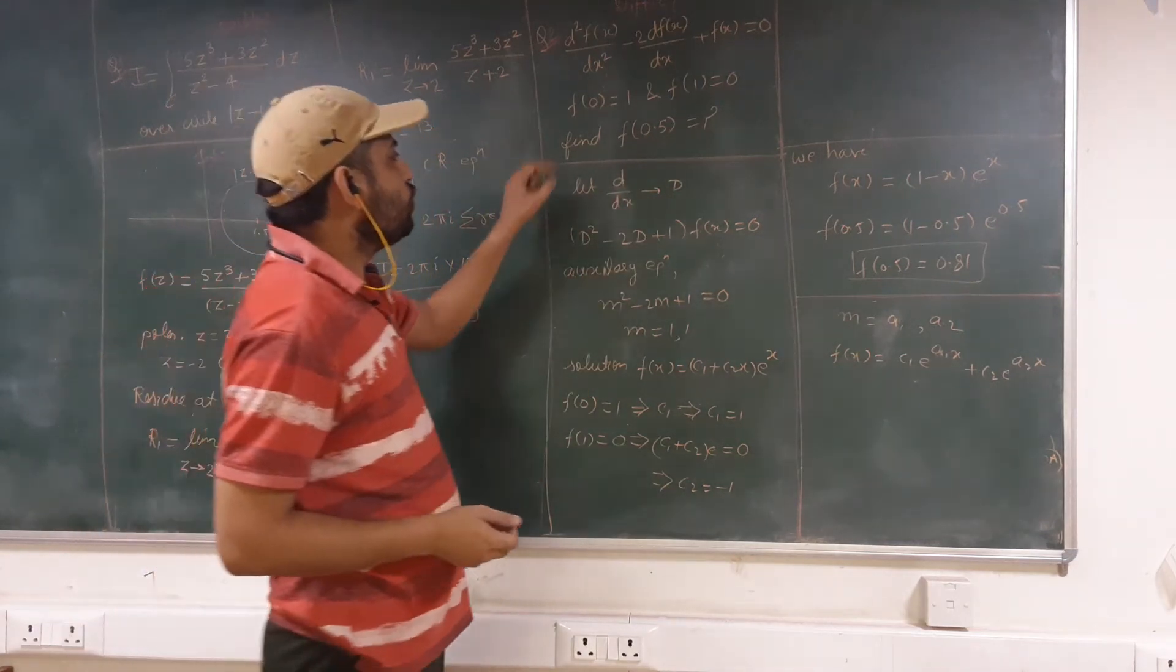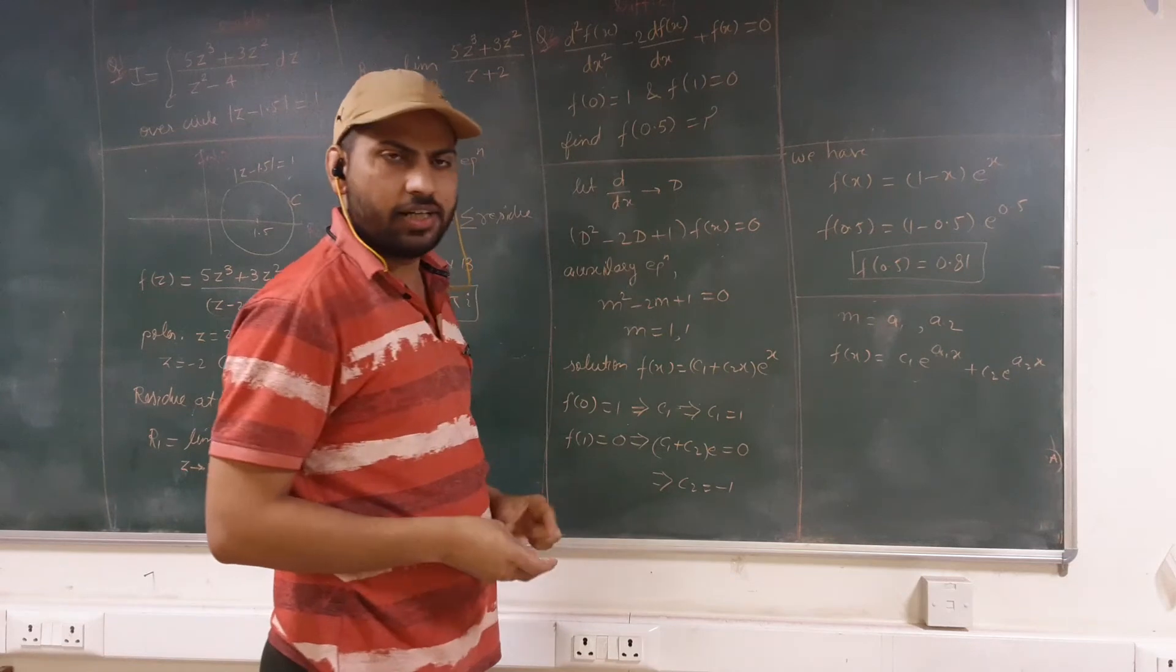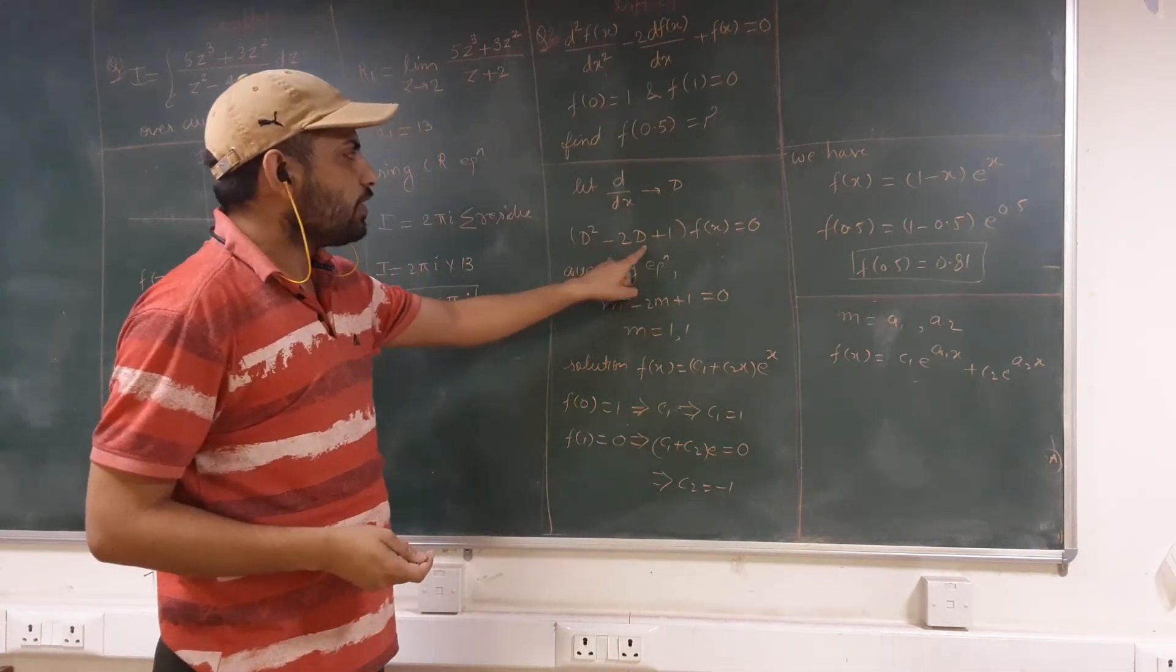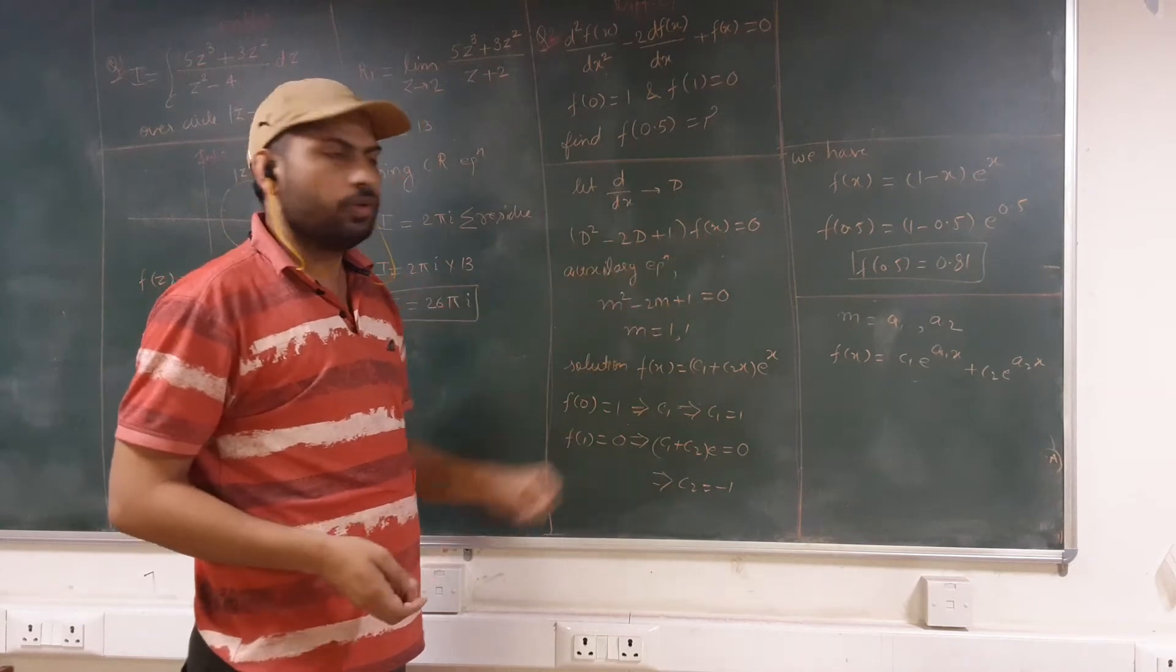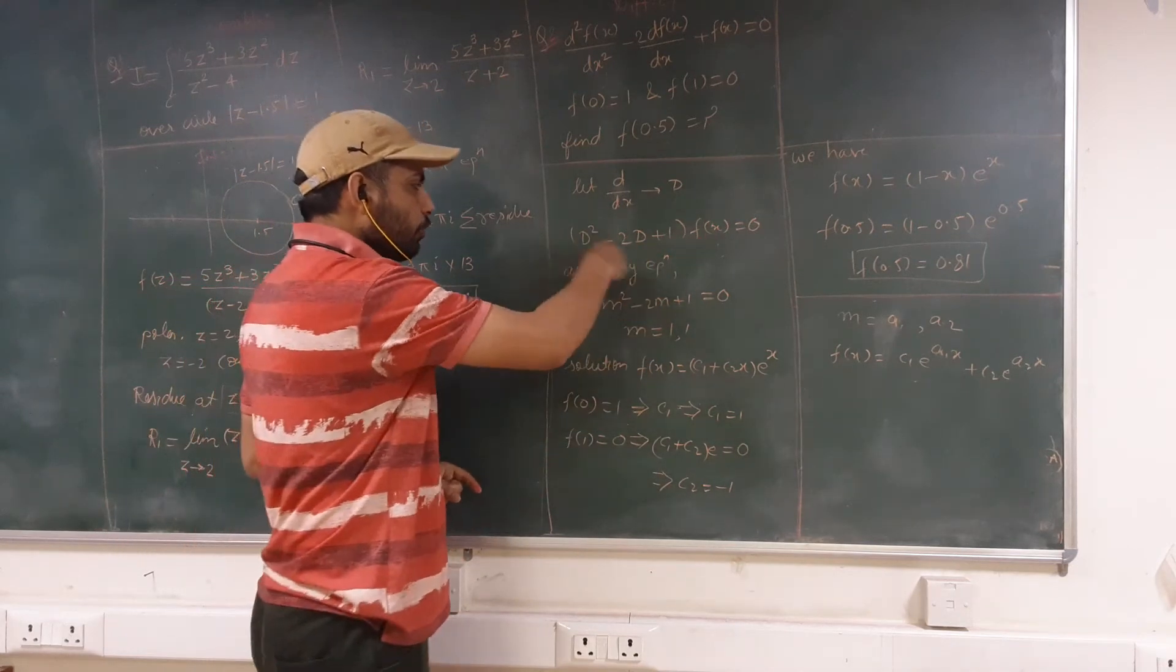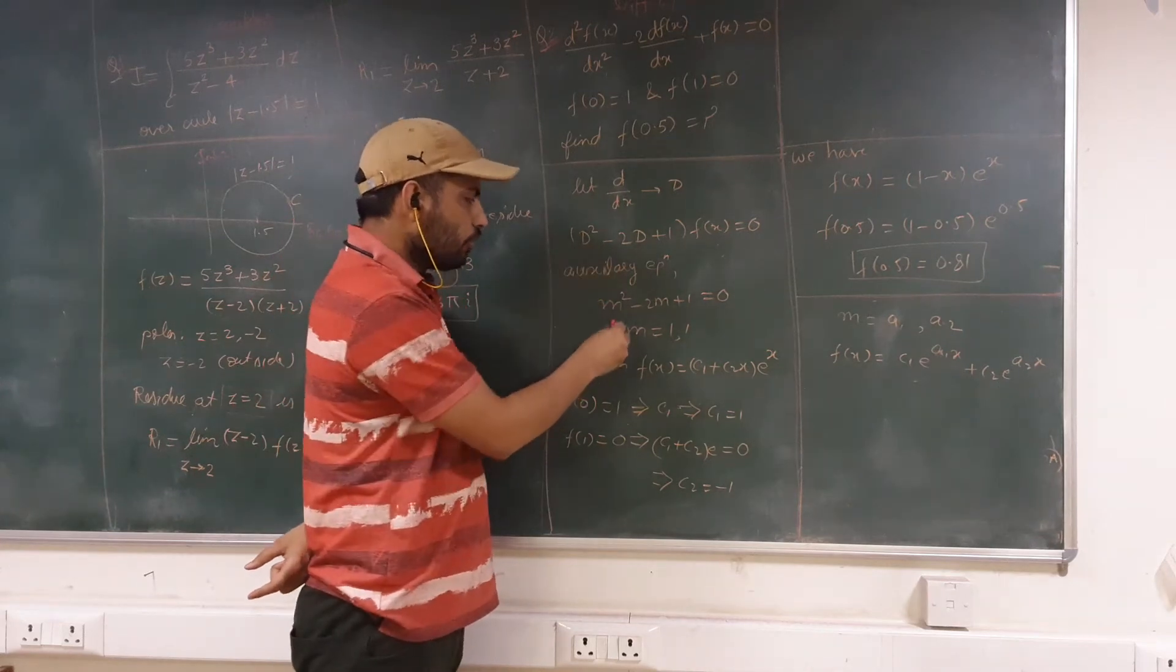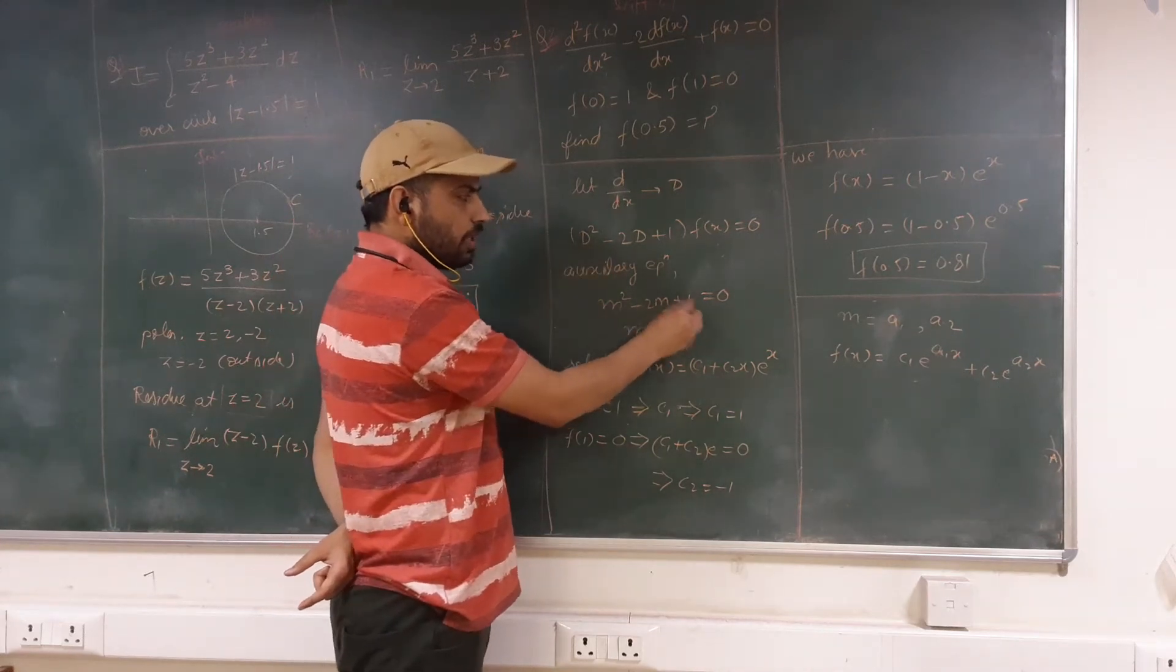Firstly, we can assume that d/dx is capital D. So this differential equation can be rewritten as (D² - 2D + 1)f(x) = 0. And from this equation, we can find the auxiliary equation that is putting D = m. So equation will be m² - 2m + 1 = 0.